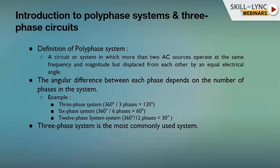Moving to polyphase systems and three-phase circuits: anything more than two phases is called polyphase. The most common polyphase system in use is the three-phase AC system. A polyphase system is a circuit in which more than two AC sources operate at the same frequency and magnitude, but are displaced from each other by an equal electrical angle. For a two-phase AC system, they are displaced by 90 degrees.